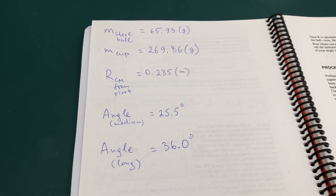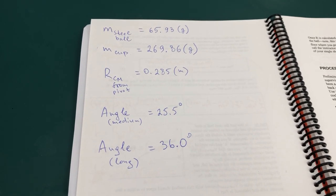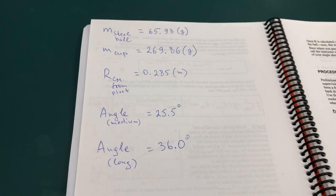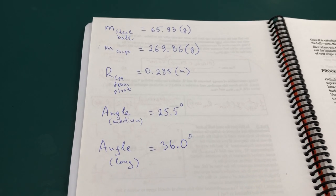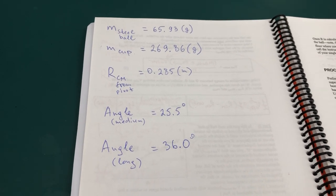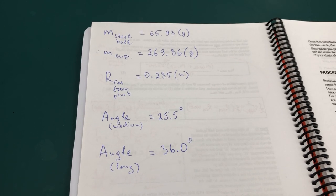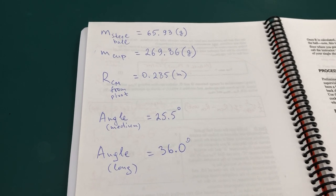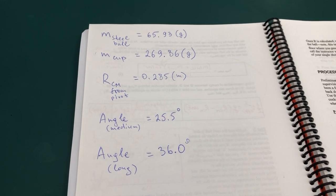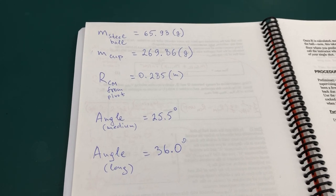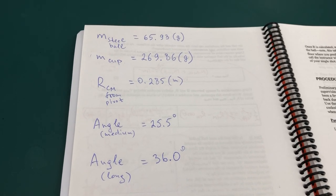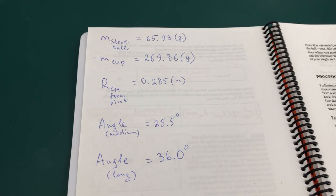The next part is the projectile motion and you have to compare the initial velocity of the ball that you're getting from conservation principles with what you already know how to calculate with projectile motion equations.